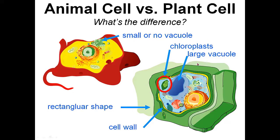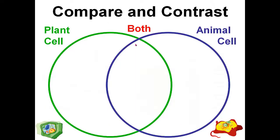We then compared the animal cell with the plant cell. The structures present in the plant cell include chloroplast, large vacuole, regular rectangular shape, and cell wall. The animal cell has flagella and small or no vacuole. This was the comparison of the structures between both cell types.